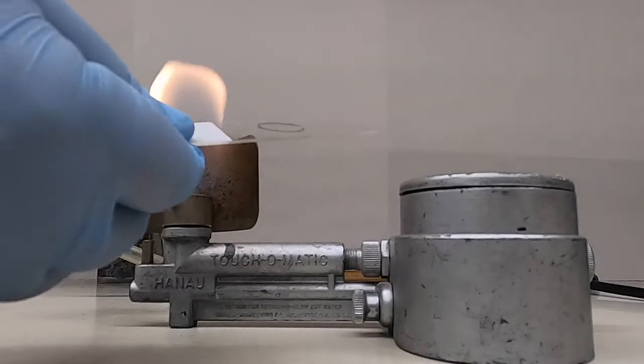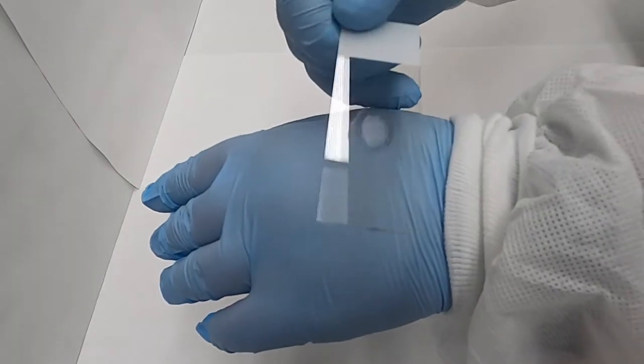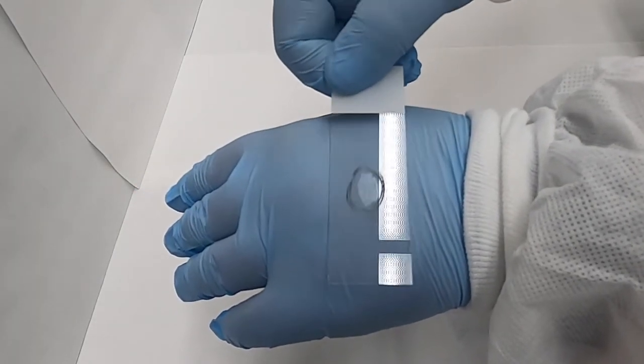The next step is to heat fix our slide, passing it through the flame several times. We're fixing it, we're not cooking the bacteria, so you want it to be warm to the touch but not overly hot.